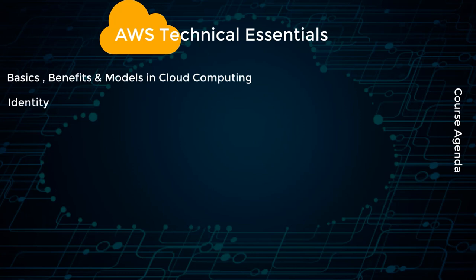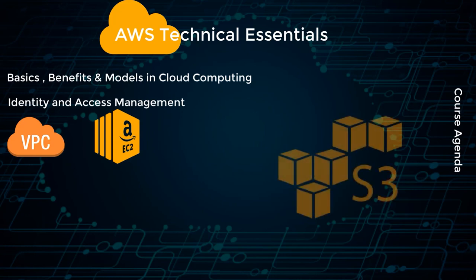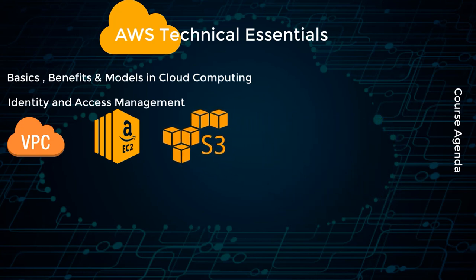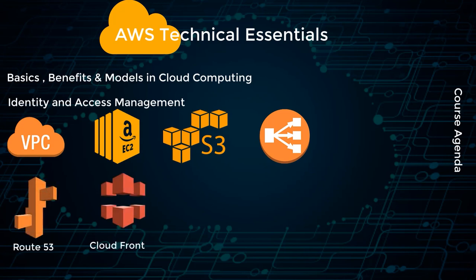For example, we'll talk about IAM, which is Identity and Access Management, Virtual Private Cloud, and Elastic Compute Cloud, which falls under the Compute section. Then we'll talk about the different kinds of storages available in Amazon. One of the key characteristics of cloud computing is elasticity and scaling, so we'll cover that as well. We'll also discuss how to balance load between web servers with Elastic Load Balancer, and we'll learn about critical services like DNS, CloudFront, and Route 53 in the second half of the course.